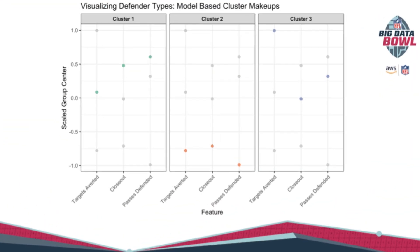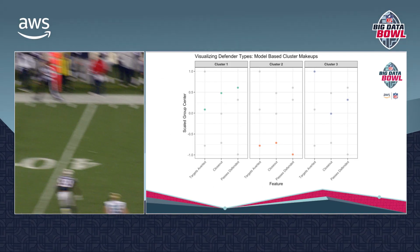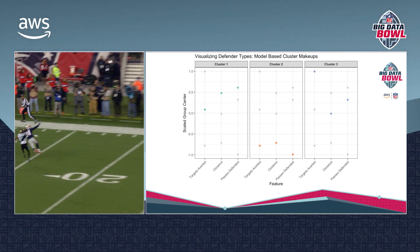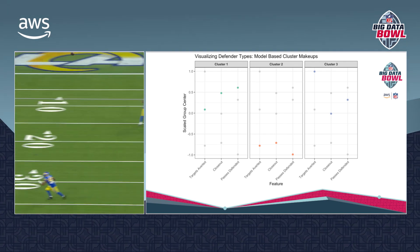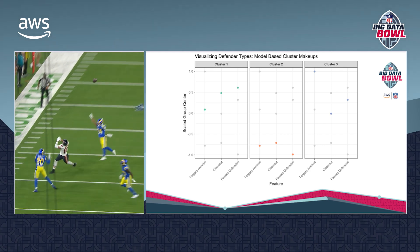Moving into the clustering: once we have these three stats, I clustered and then defined specific player types. What's most notable is that cluster two is really where you want to be as a defender — they're good throughout all phases of a play, taking away targets, breaking up passes, and closing in on their receiver. That's where you'll find your Stephon Gilmores and Jalen Ramseys — cluster two is really where you want to be.